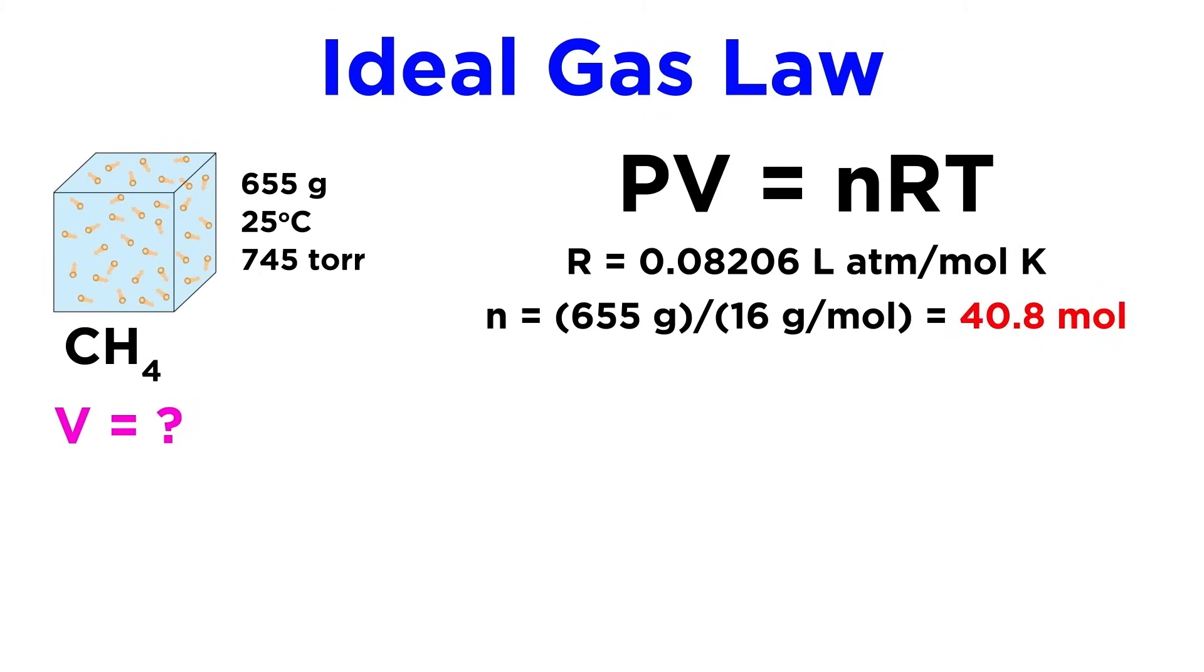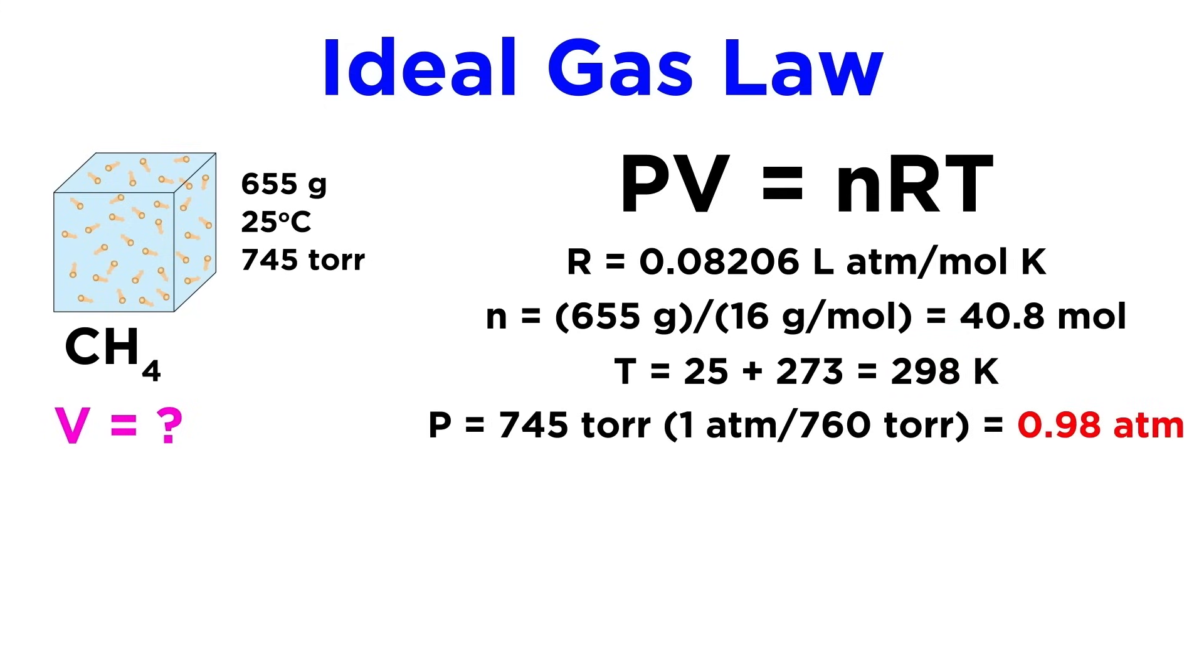Using the molar mass of methane, we will find that we have 40.8 moles of methane. Let's add 273 to the temperature to get a temperature in kelvin. And let's convert our pressure into atmospheres, using the conversion factor of one atmosphere being equivalent to 760 torr.